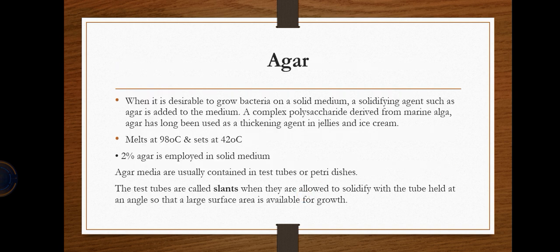The first and most commonly used culture medium is agar, which is a solid medium. A solid-solidifying agent such as agar is added to the medium. Agar is a complex polysaccharide derived from algae, previously used as a thickening agent in jellies and ice creams. Agar melts at 98°C and sets at 42°C, and two percent agar is used in solid medium.